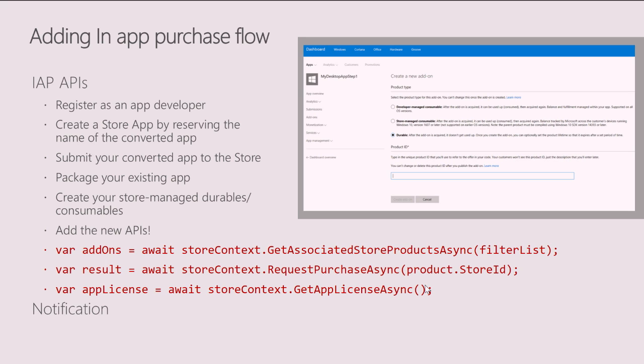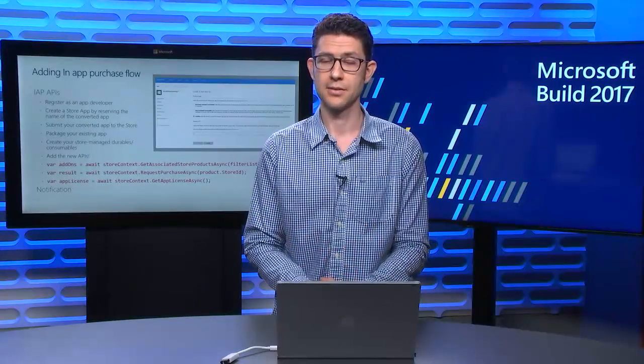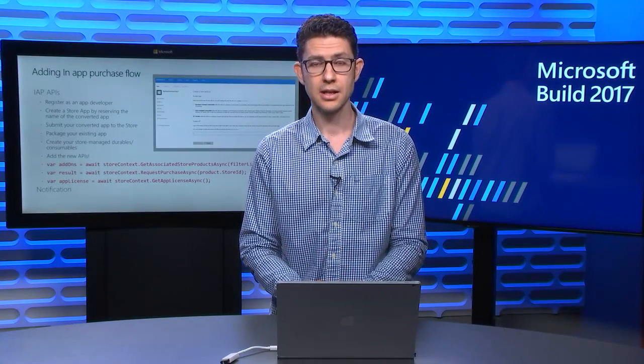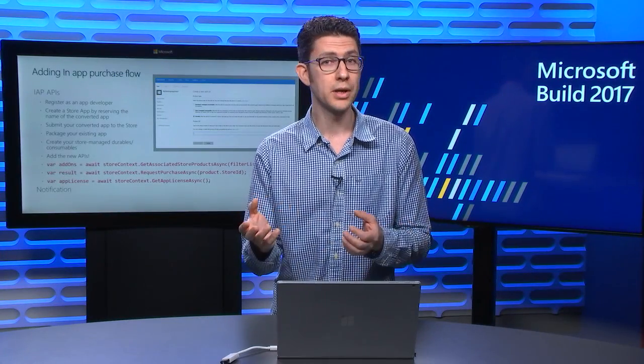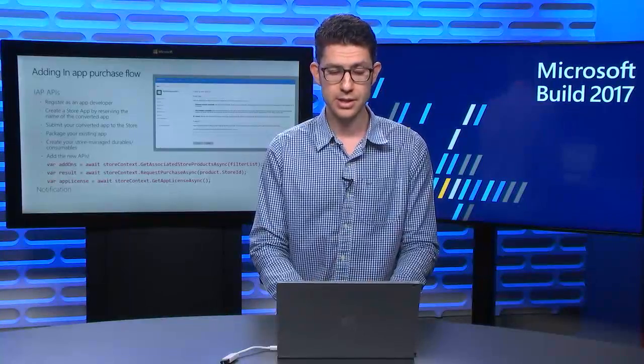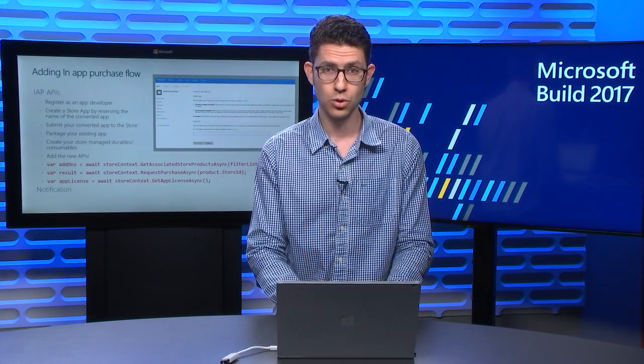For the in-app purchase flow, the first thing we have to do is create durables and consumables. Durables are things you're going to use through the whole lifetime of the application — they're usually used to unlock advanced features or move to the next level in games. Consumables are something you purchase again and again during the lifetime of the application, and they're usually used in games for coins or tokens. Let's go to the Dev Center and create a durable for our app.